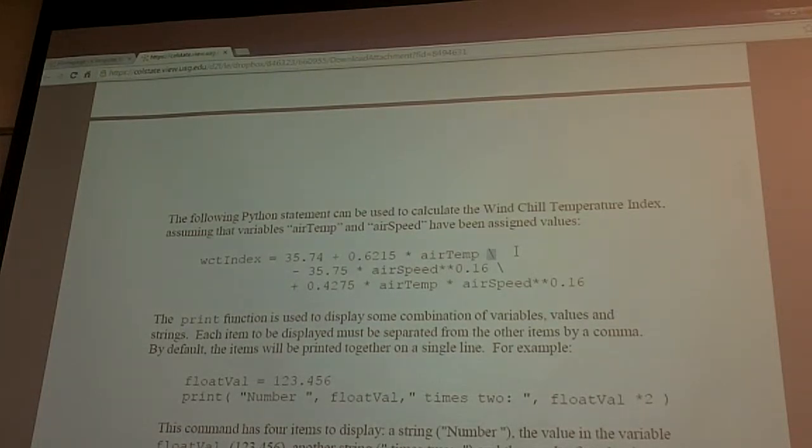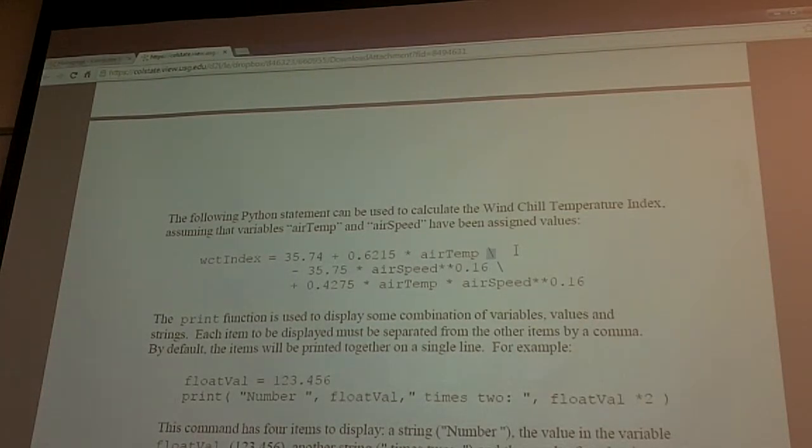When you have a long line of code and you want to continue to the second line, you can just do a backslash and if you hit enter, it'll take you to the next line. 0.6215 times air temperature.